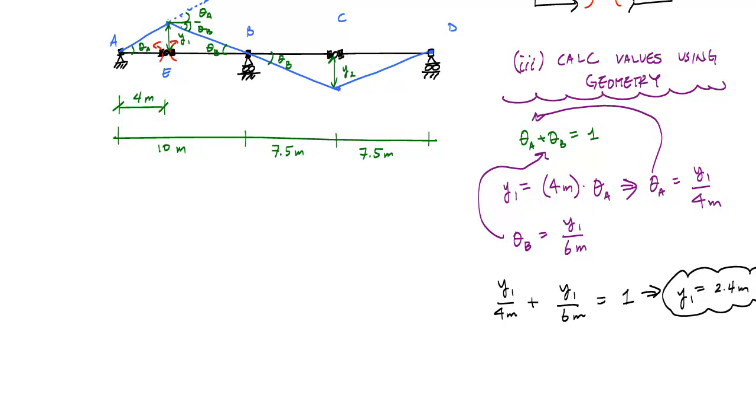Now, because I know that theta B or these segments, segment EB and BC share the same slope, I can use similar triangles to determine Y2, which tells me that Y1 over 6 meters is equal to Y2 over 7.5 meters. And I can solve for Y2, which is 3 meters.